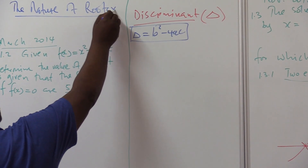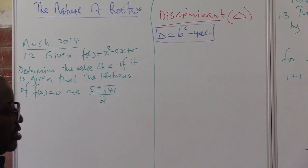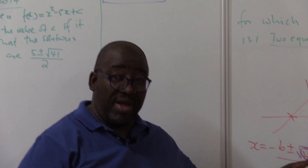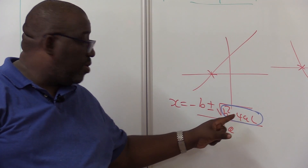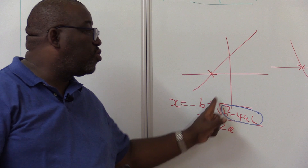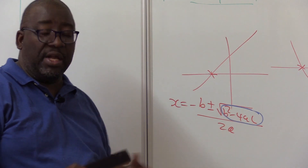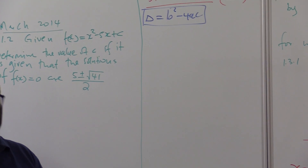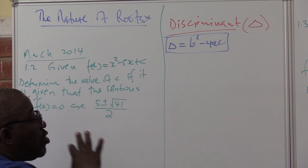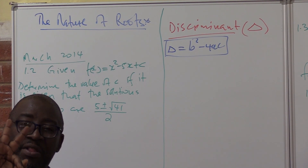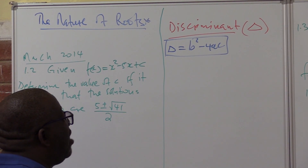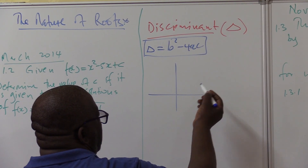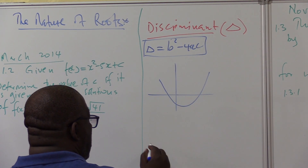This becomes important when we deal with this topic, the nature of roots. Remember, we can't solve this if the discriminant is negative, because at this level we don't know the square root of a negative number. The roots of a parabola can only behave in three ways. It can behave this way — number one. It can behave this way — number two. It can behave this way — number three.